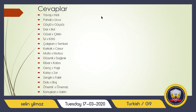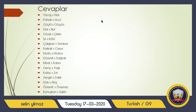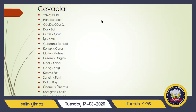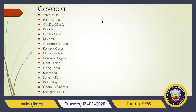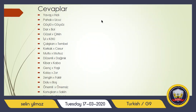I'm going to read the answers for you so you can hear how they sound and how you are going to pronounce them. Yavaş, hızlı, pahalı, güçlü, güçsüz, dar, bol, güzel, çirkin, iyi, kötü, çalışkan, tembel, korkak, cesur, mutlu, mutsuz, düzenli, dağınık, kibar, kaba, genç, yaşlı, kolay, zor. Zengin, fakir, dolu, boş, önemli, önemsiz, konuşkan, sakin, dikkatli, dikkatsiz, yakın, uzak. Anlaştık mı?